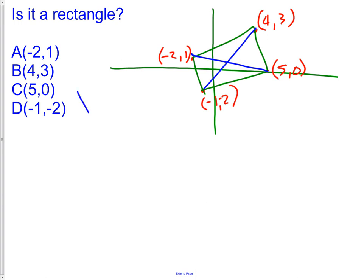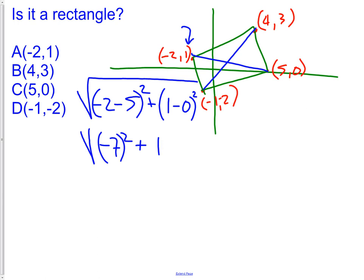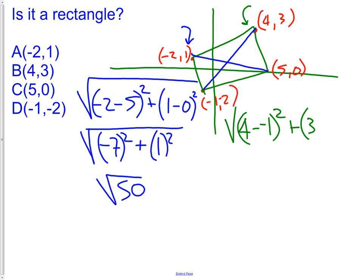So I will do the diagonal that I have the blue arrow pointed at first. So I do X minus X squared plus Y minus Y squared. I get negative 7 squared plus 1 squared, which would give me the square root of 50. Now I have to do the other diagonal. I'll point at this one with the green arrow. Again, I do the same exact thing for the distance formula. 4 minus negative 1 squared plus 3 minus negative 2 squared.